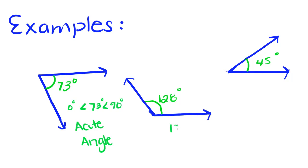So this one right here is 120 degrees, which is less than 180 degrees but greater than 90 degrees. So this is an obtuse angle.